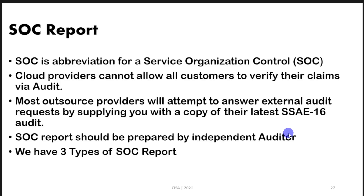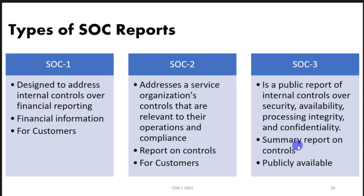We have generally three types of SOC report — let's discuss them, as this is an important topic related to the exam. The first type, SOC 1, is designed to address internal controls over financial reporting. All you need to know is that SOC 1 is about financial information and reports on controls. SOC 1 and SOC 2 reports are intended to be provided to customers whenever they request an audit of the service provider, and some service providers already publish these reports on a regular basis in a related dashboard.